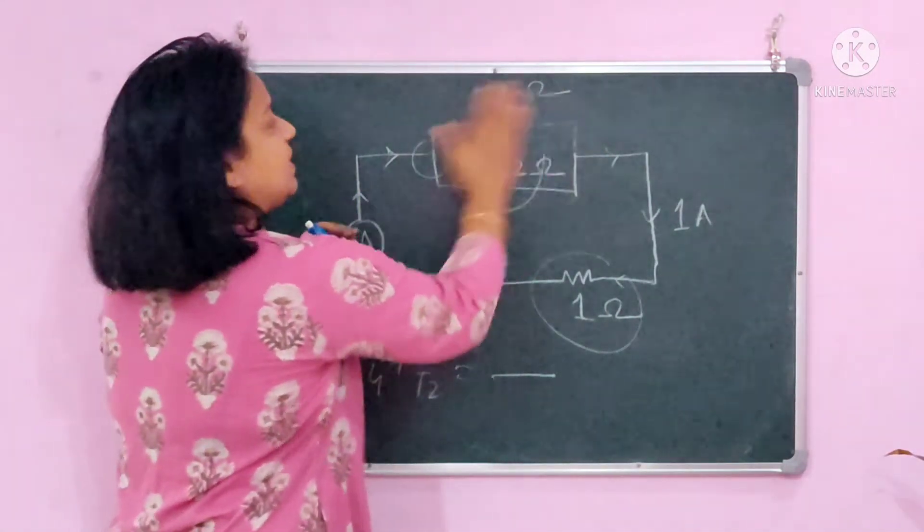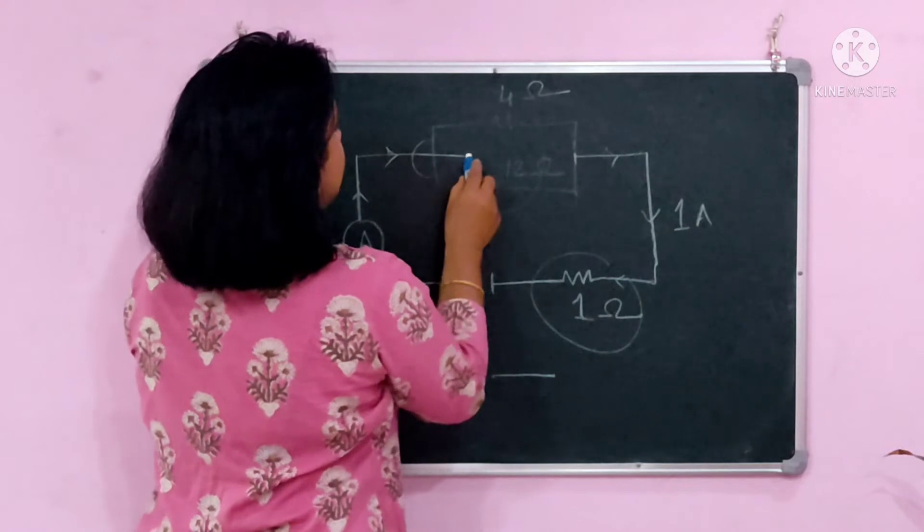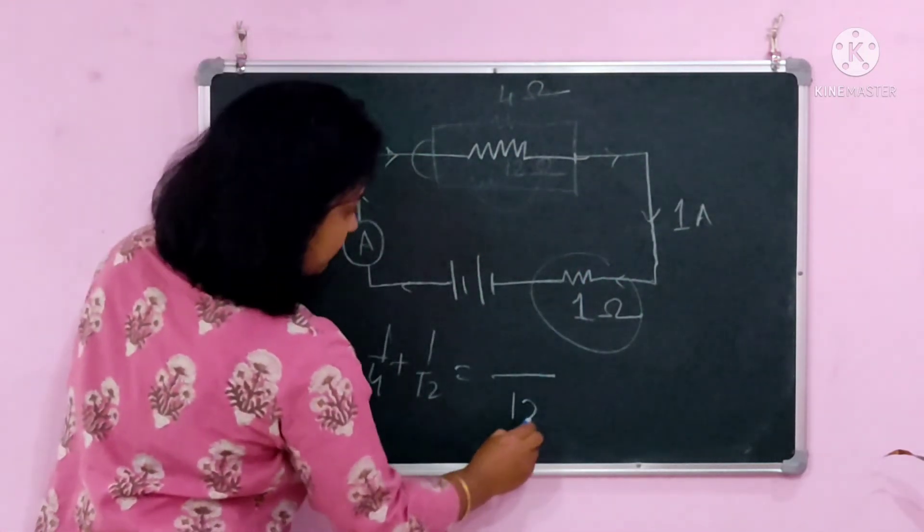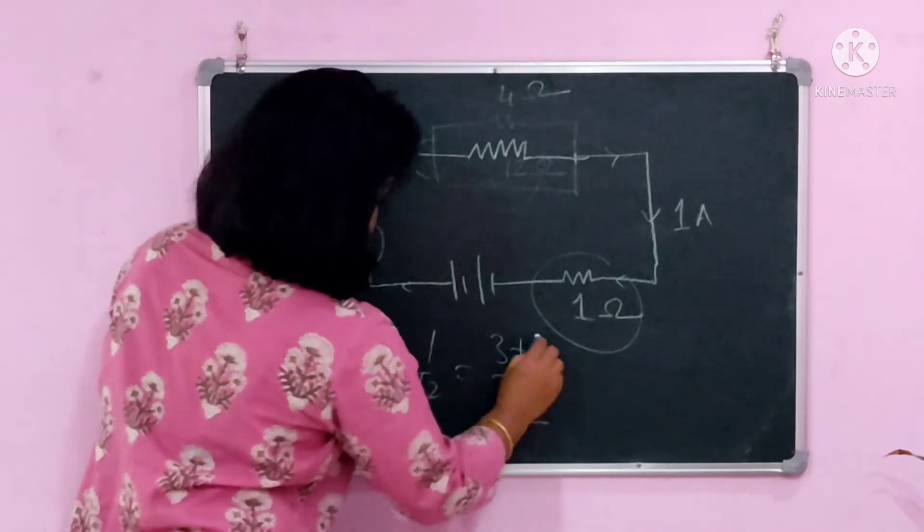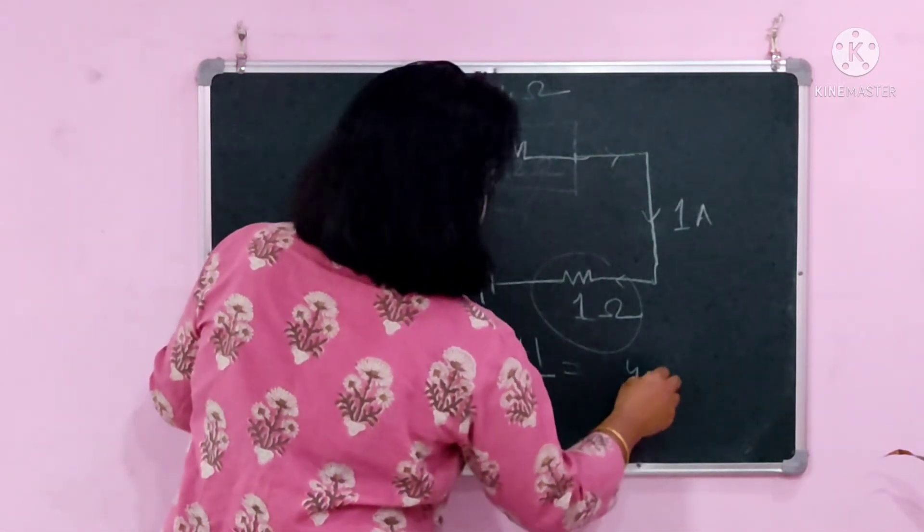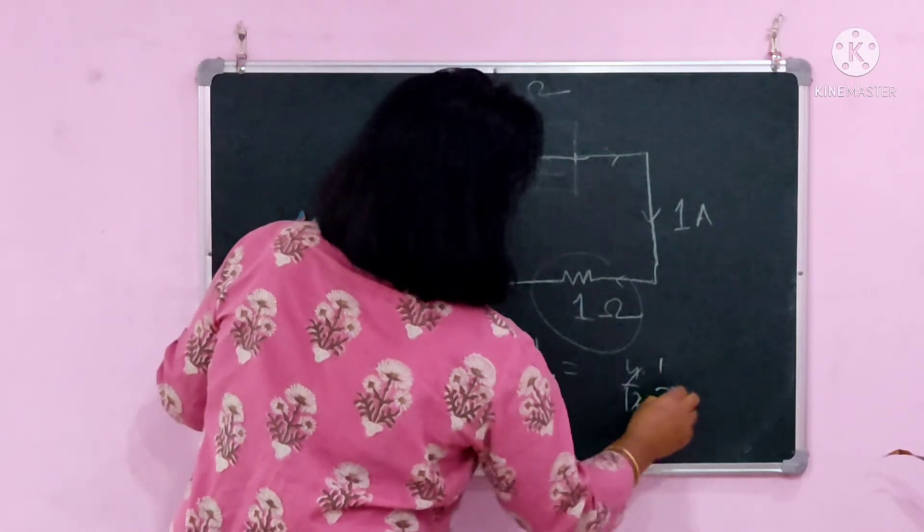this structure will become something like this. These two are parallel, you will get something like this. 3 plus 1, that is 4 by 12, means it is 1 by 3. So it is 1 by 3, that is your resistance will be 3 ohm.